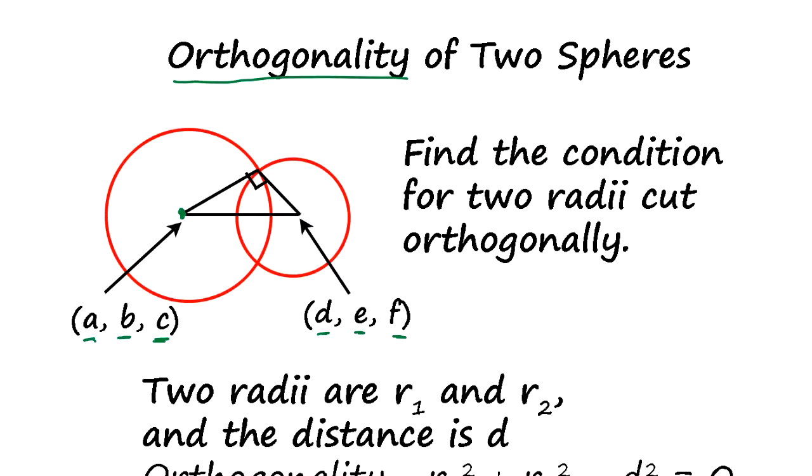And you have radius R1 and R2. Find a condition that when you connect them together, this is going to be orthogonal. That means it's going to make a right triangle.